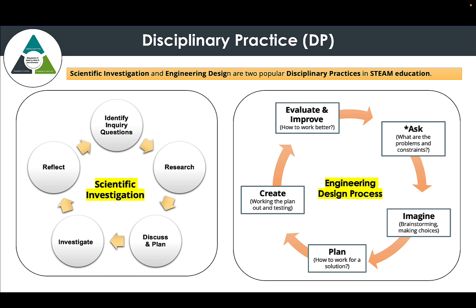A simple engineering design cycle also comprises five steps: ask to find out the problems and constraints, imagine or ideate the possible solutions, plan the work needed to construct the solution, implement the plan to create the solution, and finally to evaluate and improve.